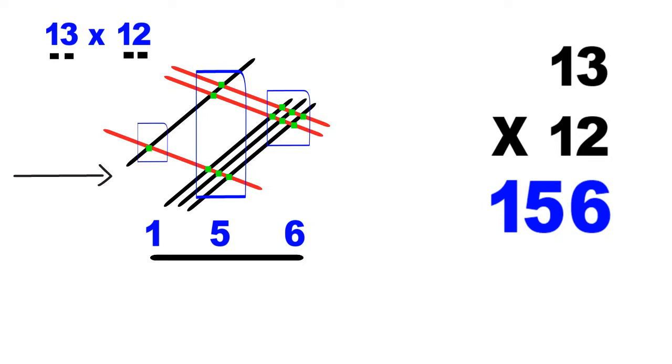Isn't it simple? As you can see, this line technique is very simple. Just draw lines from left to right. And count the intersections in each zone from right to left. Let's try another example using the same technique.